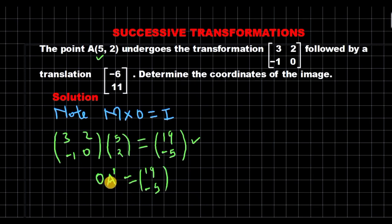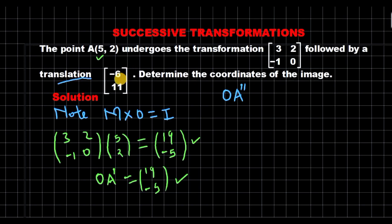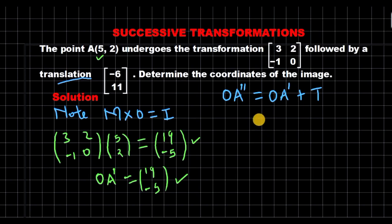Now, with the position vector of the first image representing the first image, the second image is obtained by the second transformation. The second transformation, we are told, is a translation represented by the translation vector (-6, 11). We obtain it as the object — which is the first image — plus the translation vector. The object is given as (19, -5).